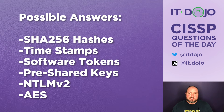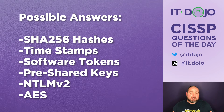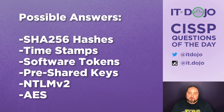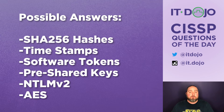Kerberos uses the idea of an authenticator in its messages that includes a ticket's lifetime as well as a timestamp, in order to make sure that packets aren't being replayed. Whenever an authentication-related packet is sent back and forth, these values are validated to make sure that they're not the same time or earlier than a previous message that's been sent.